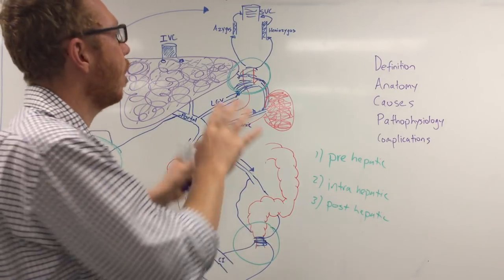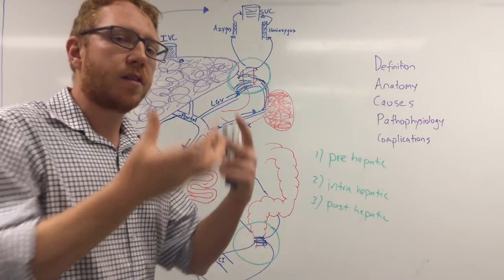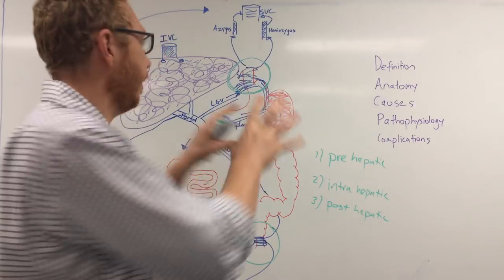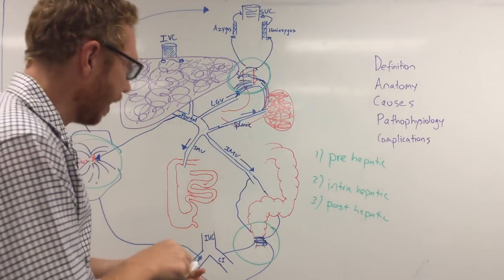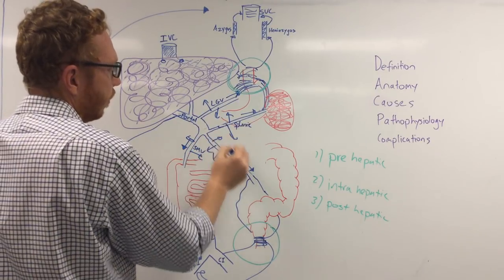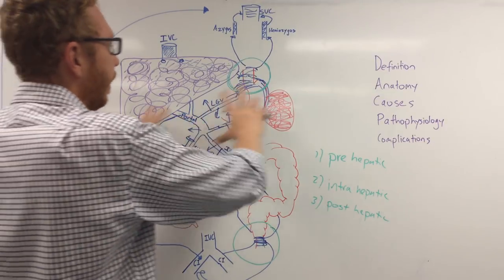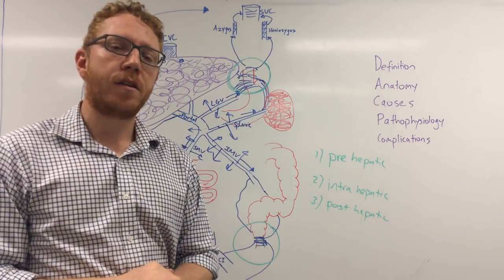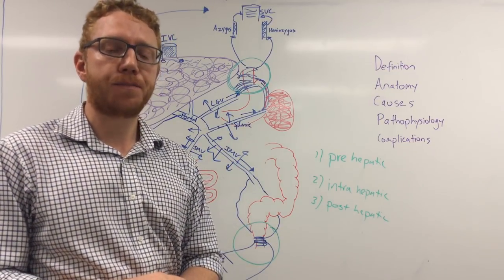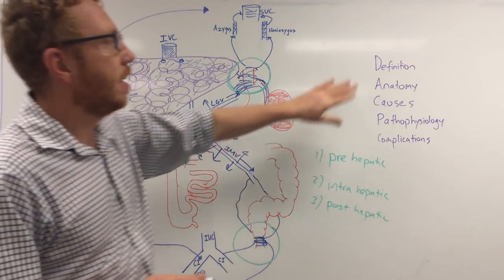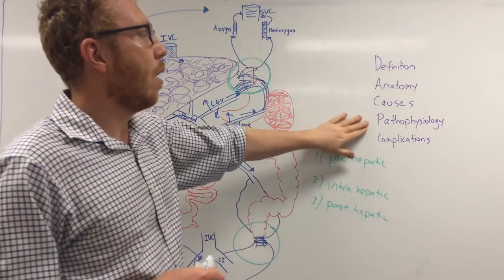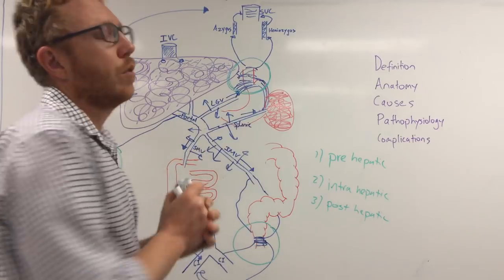Finally, similar to pulmonary oedema seen with pulmonary hypertension, increased portal system pressure causes fluid to leak into the peritoneum due to raised hydrostatic pressure. This is called ascites — the accumulation of fluid in the peritoneal space — and is present in approximately 80% of patients. To summarise, we've covered the definition, anatomy and blood flow, the main causes of portal hypertension, how it manifests, and the complications to the body if blood is not properly processed.